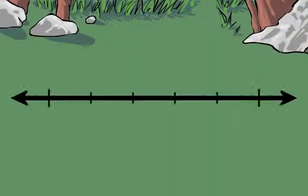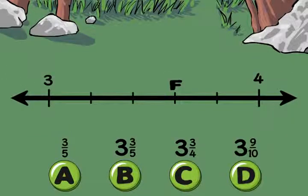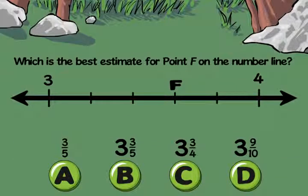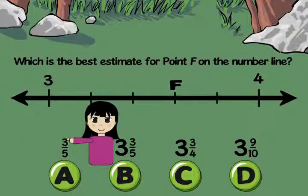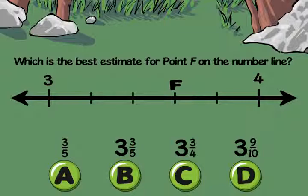We can use the same steps to identify fractions or mixed numbers on a number line. Let's look at this example. Which is the best estimate for point F on the number line? I vote for A because it's fractional parts.